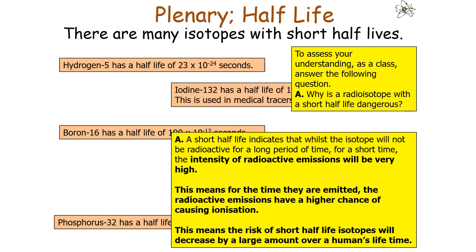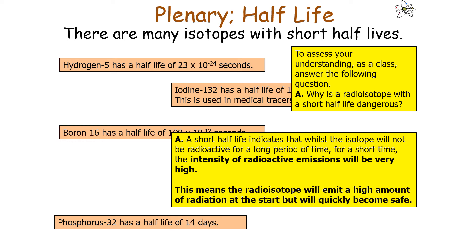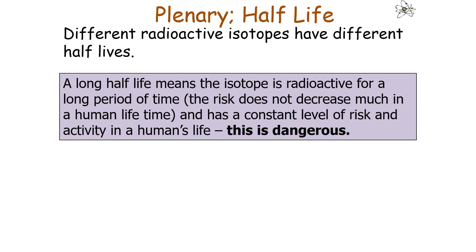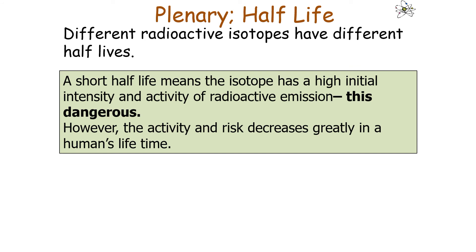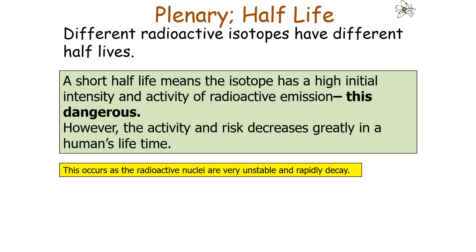The risk of a short half-life isotope decreases by a large amount over a human's lifetime — it emits a high amount of radiation at the start but then quickly becomes safe. A long half-life means the isotope is radioactive for a long period of time, so risk does not decrease much during a human lifetime, meaning there is a constant level of risk and activity. A short half-life means a high initial intensity and activity of radioactive emission, which is dangerous, but the activity and risk decrease greatly over a human's lifetime because the radioactive nuclei are very unstable and rapidly decay over time.